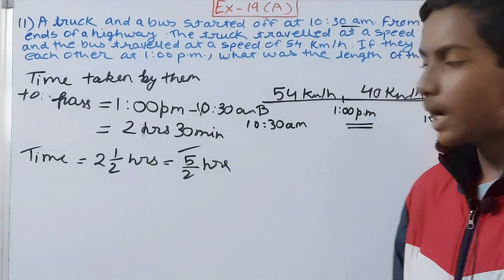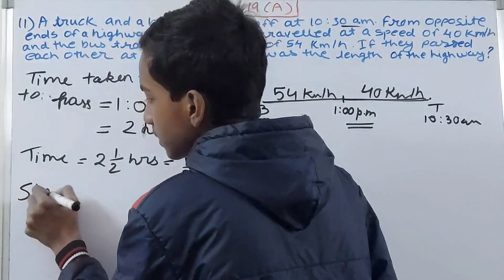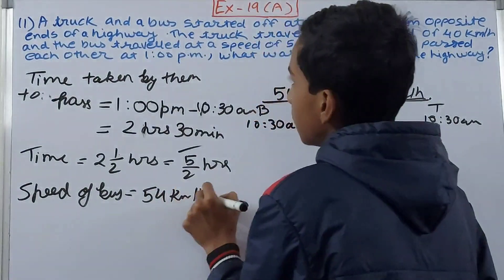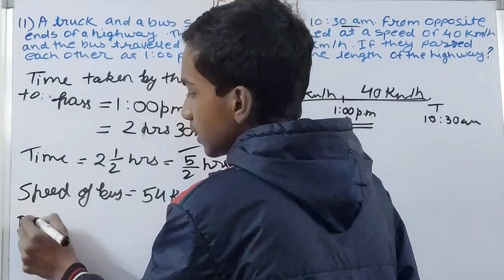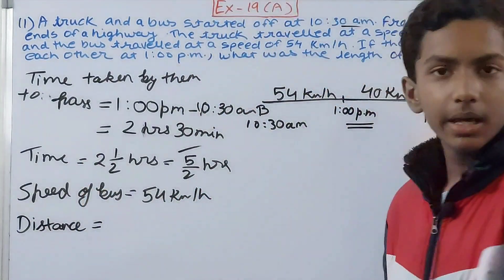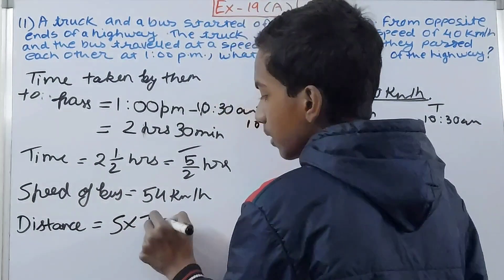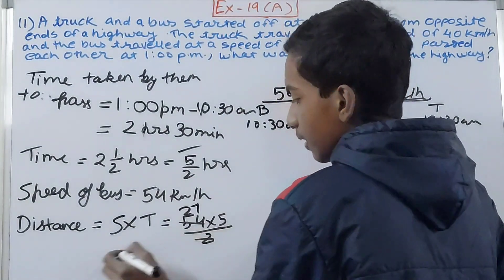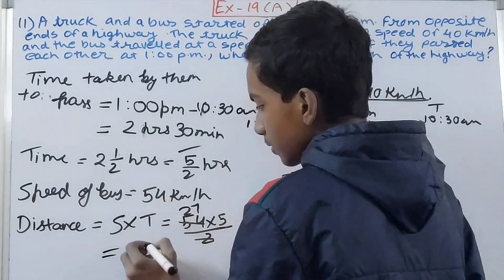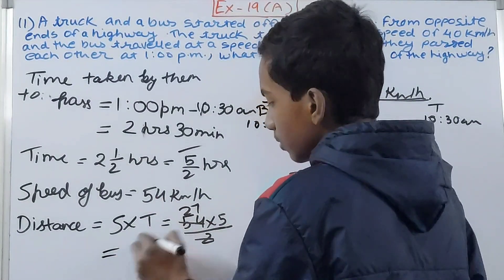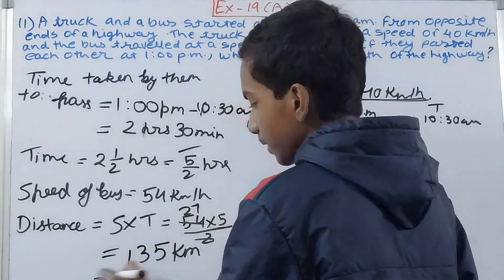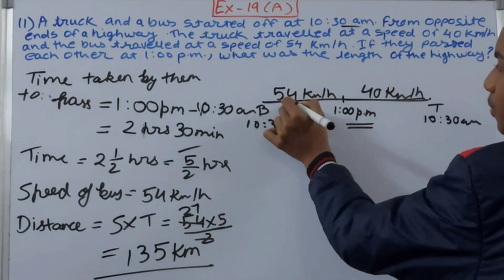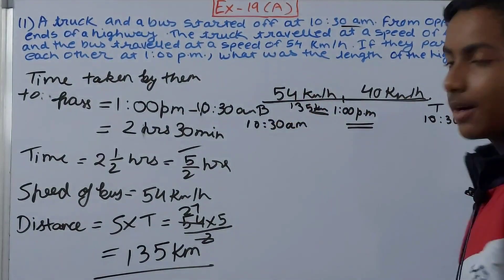Now we know the time is 5/2 hours. Let's calculate the bus distance first. Speed of bus = 54 km/h. Distance = speed × time = 54 × 5/2. Canceling gives us 27 × 5 = 135 kilometers. So the bus has traveled a distance of 135 kilometers.